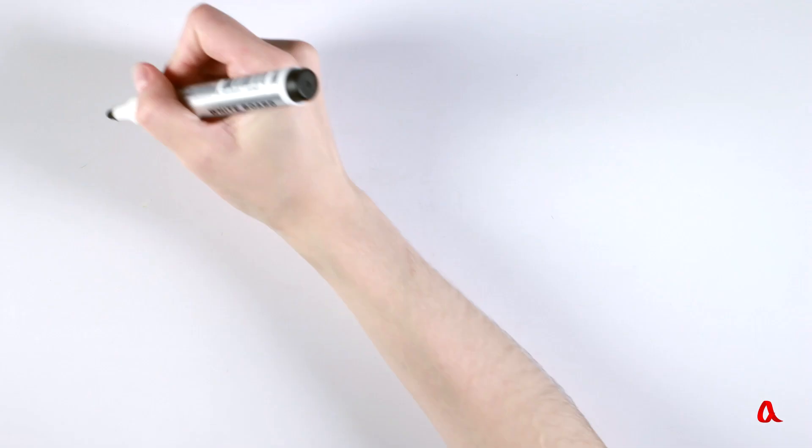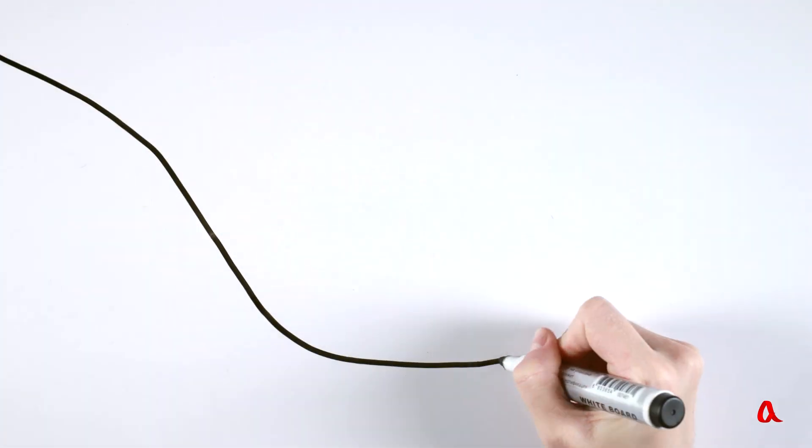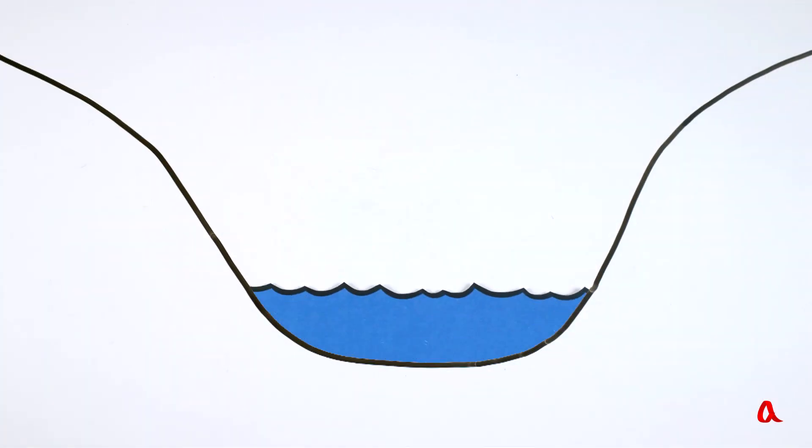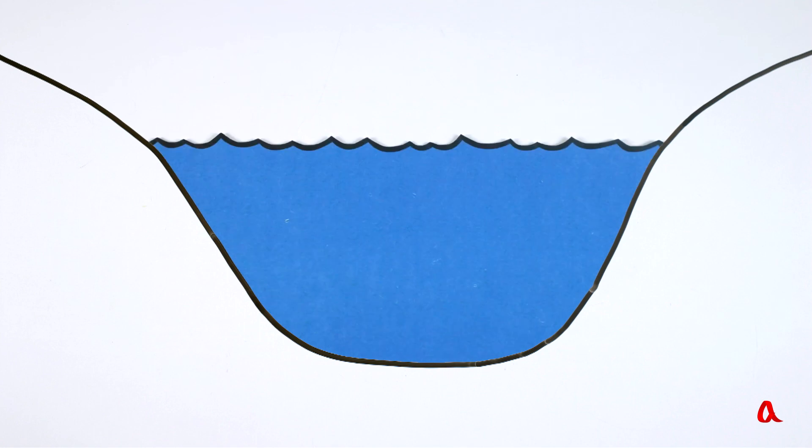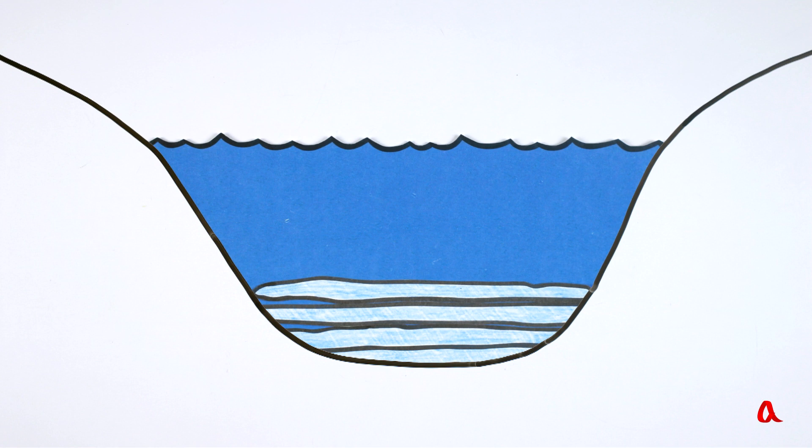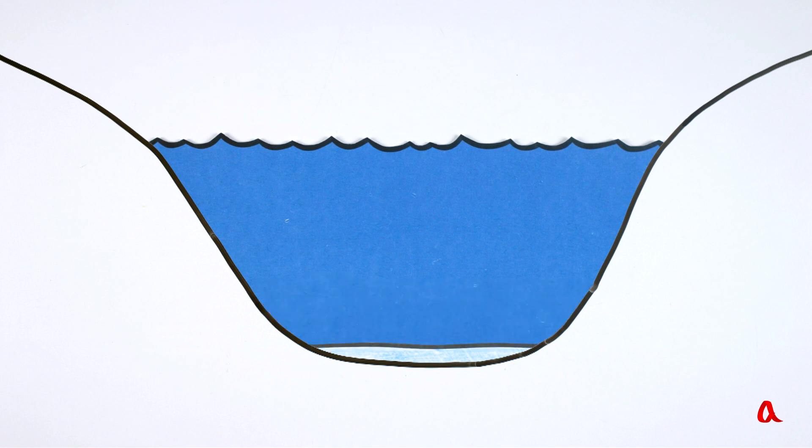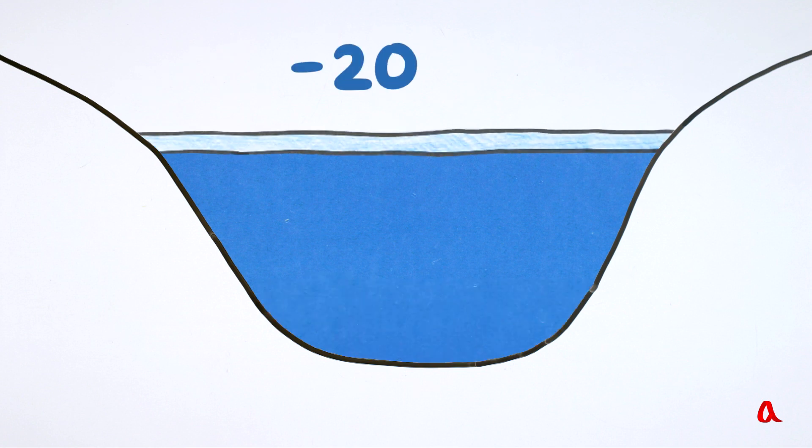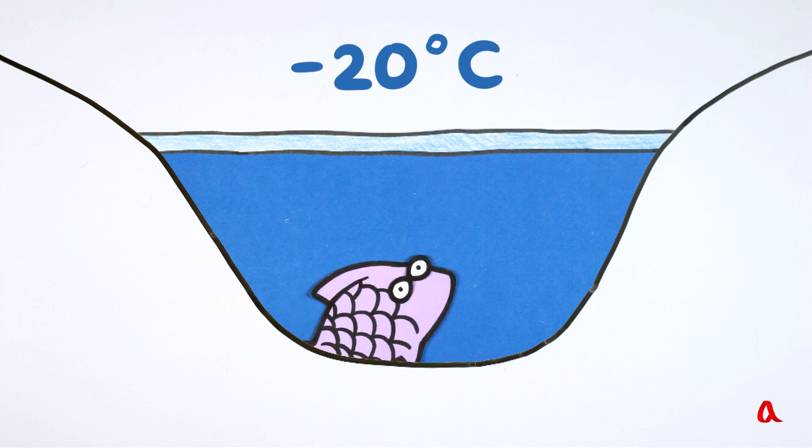If water did not possess anomalous properties, some natural phenomena would have an entirely different look. In winter, water would only freeze on the surface of pools, ice would sink down to the bottom and it wouldn't be too easy to melt it even in warm weather. But in reality, the crust of ice remains on the surface, covering the pool up from cold air.